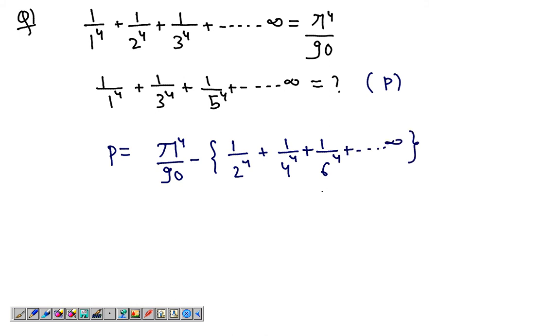Since π^4 over 90 is the sum of the reciprocals of the powers to the 4th, and P is when you just take the odd numbers, you can also write it as π^4 over 90 take away the even numbers.